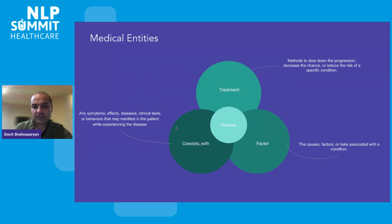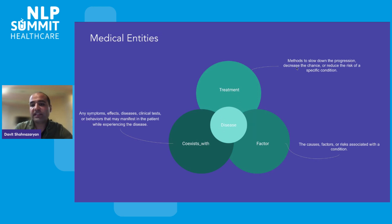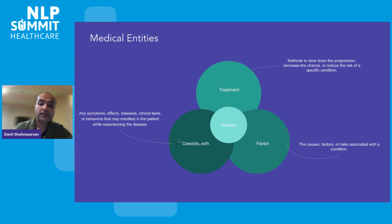There are four different types of medical entities that we extracted from the medical notes. The center is the disease — we extracted all diseases from the medical notes. We also extracted treatments, which we define as methods that slow down the progression, decrease the chance, or reduce the risk of a specific condition. Factors are causes, risks, or factors associated with the disease. And we have another term called 'coexists with' — those are any symptoms, effects, diseases, clinical tests, or behaviors that manifest within the patient while experiencing the disease.